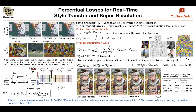Another application is style transfer. For each style that you choose, you train a neural network, and when an input image goes in, it outputs an image in the style of the image you chose. At the same time, you want the content to match. The style reconstruction loss comes from the gram matrix, which we've seen before.